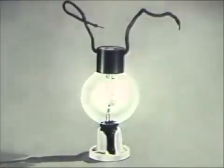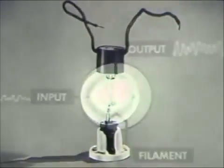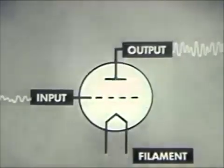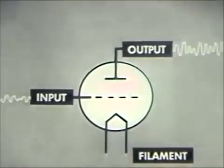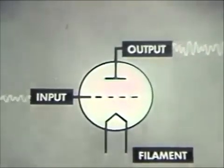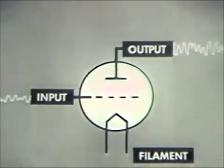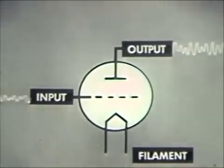He called this amplifying tube an audion. Weak signals applied to the input, or grid, of the audion caused similar and much stronger signals to flow from the plate output.